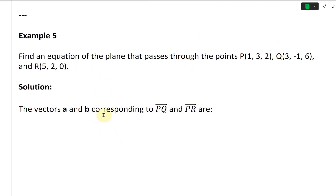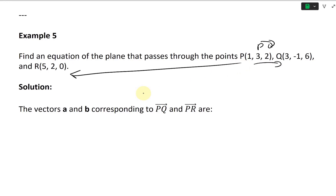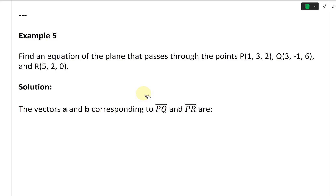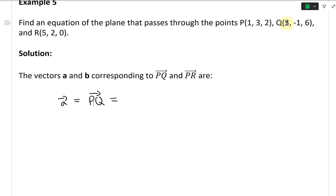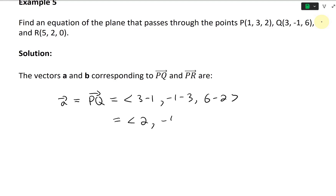The vectors A and B correspond to the direction from P to Q and from P to R. So A equals the vector PQ — subtracting P's components from Q's: (3−1, −1−3, 6−2), which gives A = (2, −4, 4).